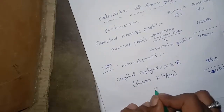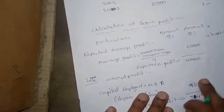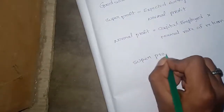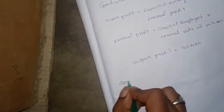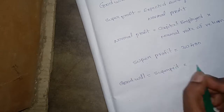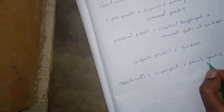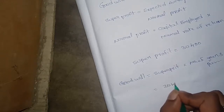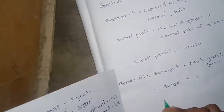This gives us the super profit. Step 3: Calculation of goodwill. Goodwill equals super profit multiplied by the number of years of purchase. Super profit is 30,400, multiplied by 3 years of purchase.